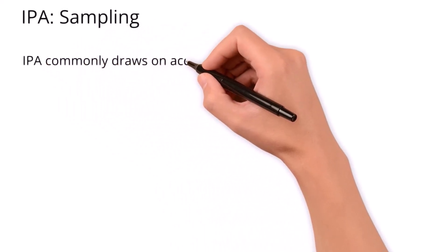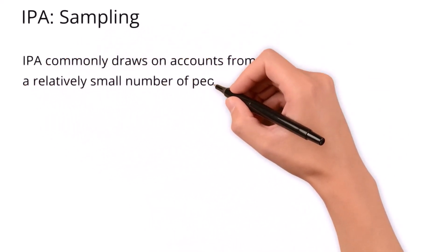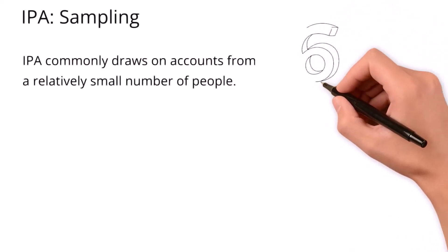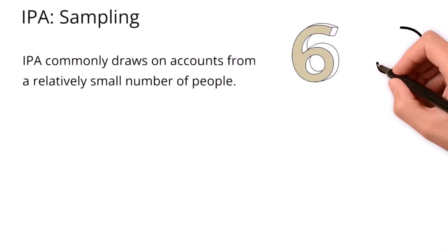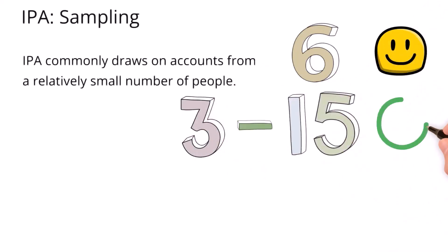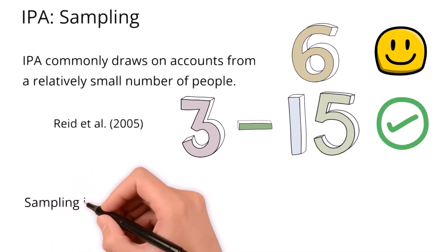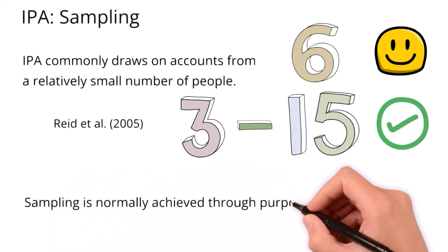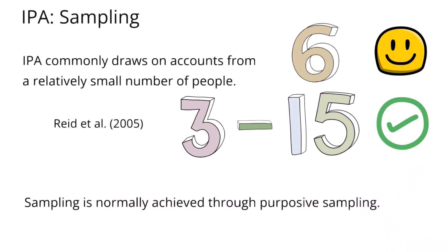When it comes to sampling, IPA commonly draws on accounts from a relatively small number of people. For example, Reid et al. has suggested that 6 is a good number, but 3 to 15 is acceptable. Given the focused and particularistic nature of IPA, sampling is normally achieved through purposive sampling, carefully selecting participants based on their ability to offer meaningful insights into the topic being researched. This can lead to homogenous sampling.